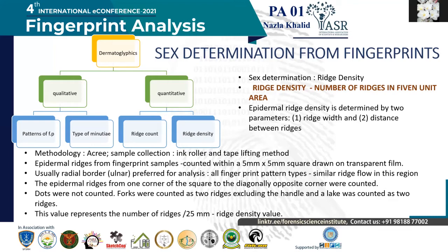All the researchers reviewed adopted the method given by Acree, and sample collection was either by means of ink roller or tape lifting method. Once the samples were collected, they were counted by plotting a square of 5mm × 5mm dimension on a transparent film, and the diagonal was drawn through the square. The ridges were counted from one corner of the square to another. Usually the radial borders were preferred for analysis as all fingerprint patterns possess similar ridge flow in this region. For right-handed fingerprints, the left corner of the square was used. While counting, dots were not counted, forks were counted as two ridges, and lakes were also counted as two ridges. The number of ridges per 25mm² square defined the ridge density.